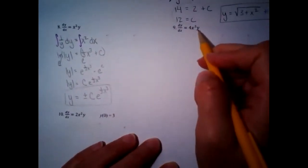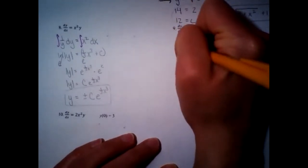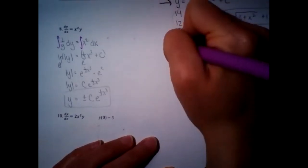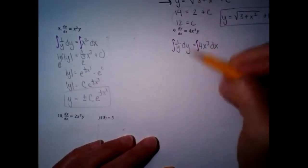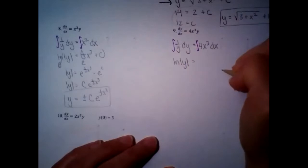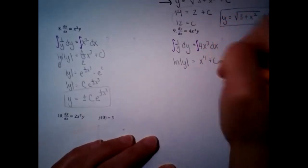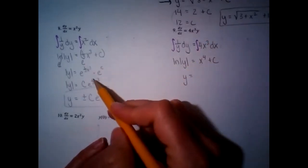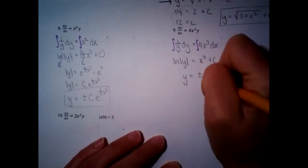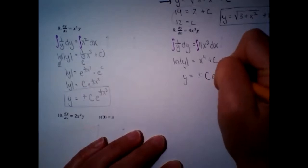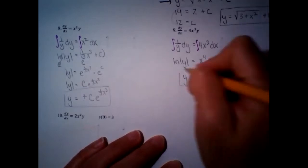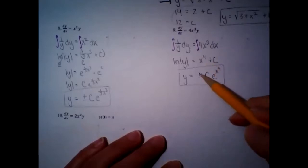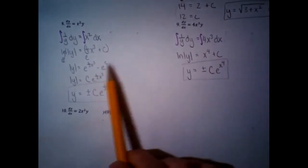Let's try another one like that. We're going to divide over the y — so it's (1/y) dy — then multiply over the dx to get 4x³ dx. Anti-derivative: since it's 1 over y, that's ln, and on the right side we get x⁴ + C. Then exponentiate both sides. You probably won't want to write every single step each time. You'll get y = ±C·e^(x⁴) — the big constant out front comes from e^C, and the plus minus is for the absolute value.